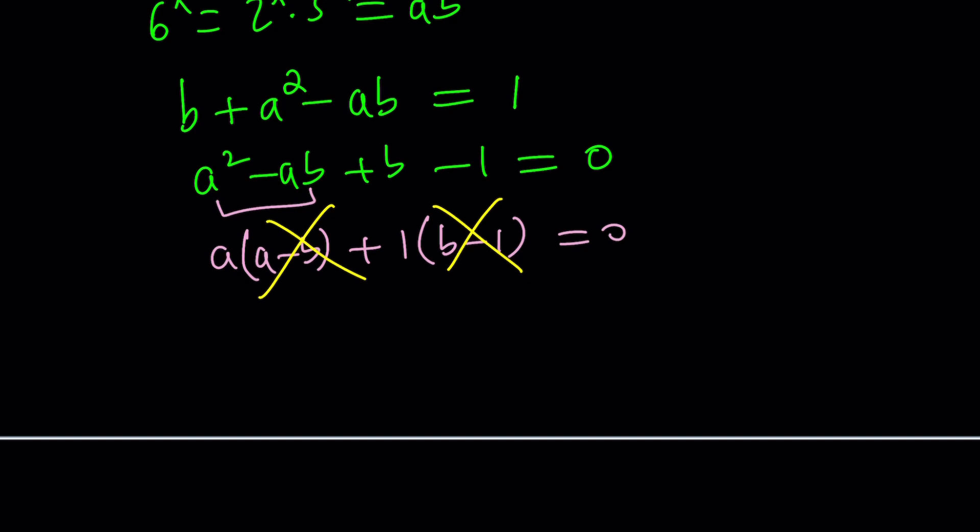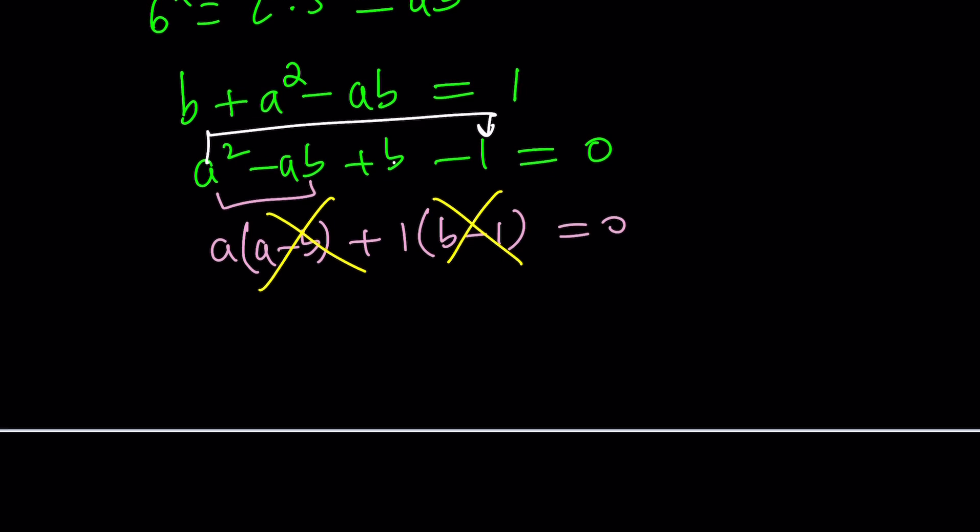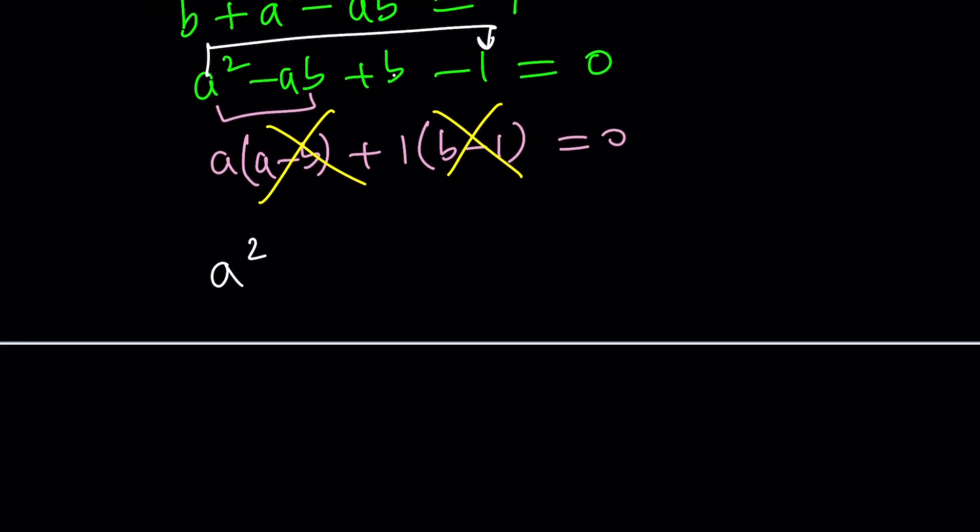So we're going to group differently, and we're going to associate this term with this term. Because you don't really have a lot of options. a^2 and b don't go well together. So that's your only option now. So I'm going to put these two together. And then these two guys, maybe I can just write it like this, equal to 0.